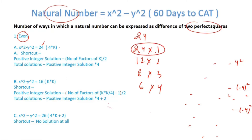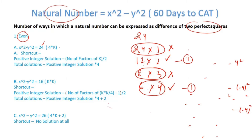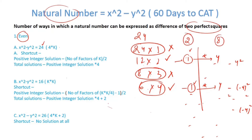Looking at 24×1: that's even×odd, so no solution. 12×2 gives one positive integer solution. 8×3 is even×odd, so no solution. 6×4 also gives one positive integer solution. So total positive integer solutions = 2. Each positive integer solution gives 4 total solutions (including negatives), so total integer solutions = 2×4 = 8.